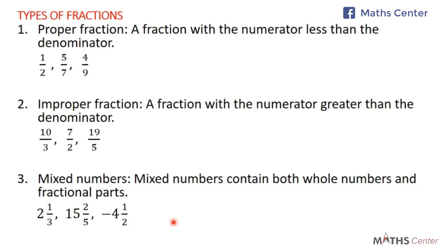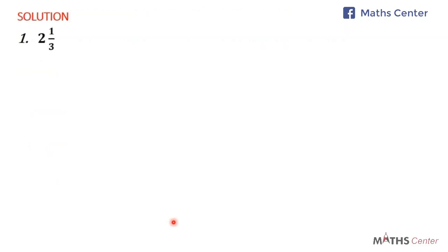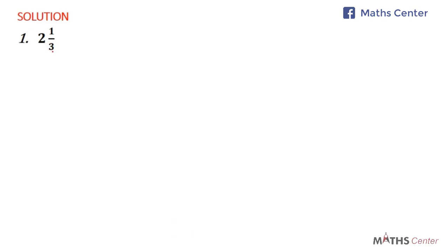So we are going to learn how to change mixed numbers to improper fractions. We are going to change 2 whole number 1 over 3, 15 whole number 2 over 5, negative 4 whole number 1 over 2, and 7 whole number 3 over 4 to improper fractions. The first thing you need to do is multiply the denominator by the whole number part. So for 2 whole number 1 over 3, you multiply the denominator, which is 3, by the whole number part, which is 2. We know that 3 times 2 gives us 6.